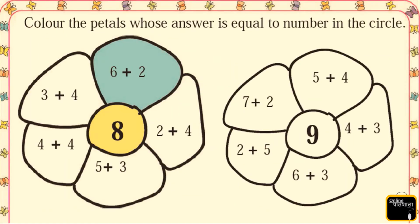Now students, the next question: color the petal whose answer is equal to the number in the circle. The answer should be 8 — whenever we add two numbers and the answer is 8, we color that petal. Tell me, 6 plus 2 is? Yes, very good — 6 plus 2 is equal to 8, so we color this petal. This one is done for you.